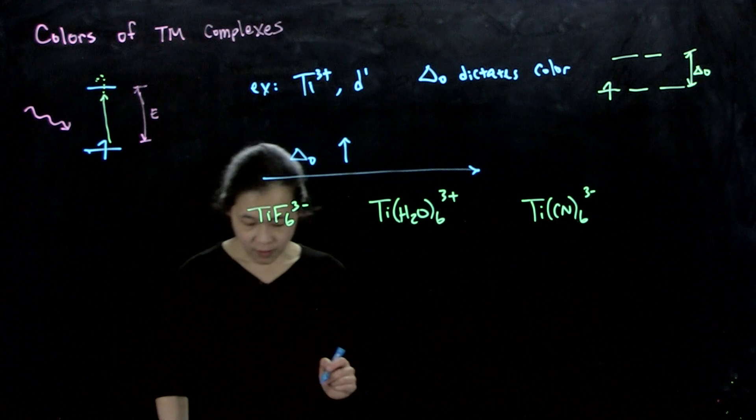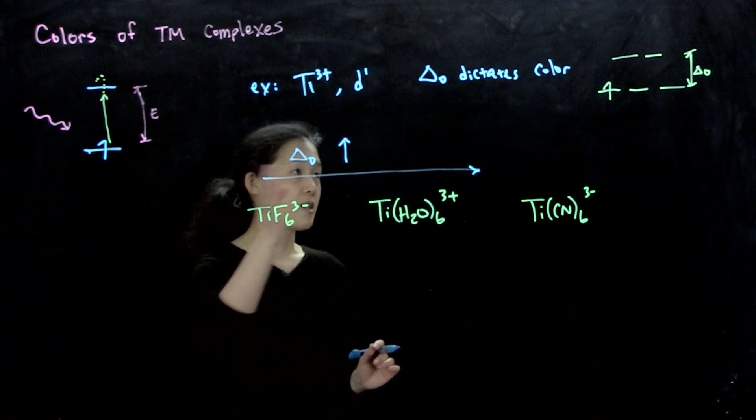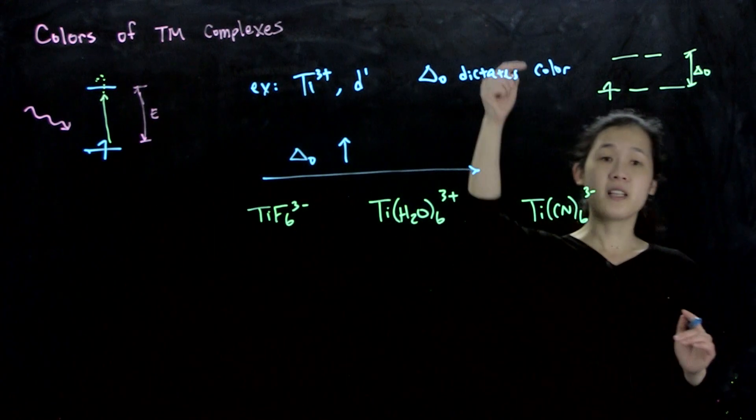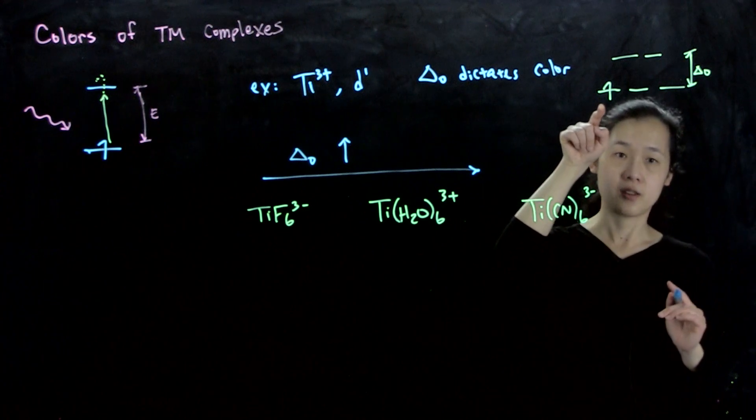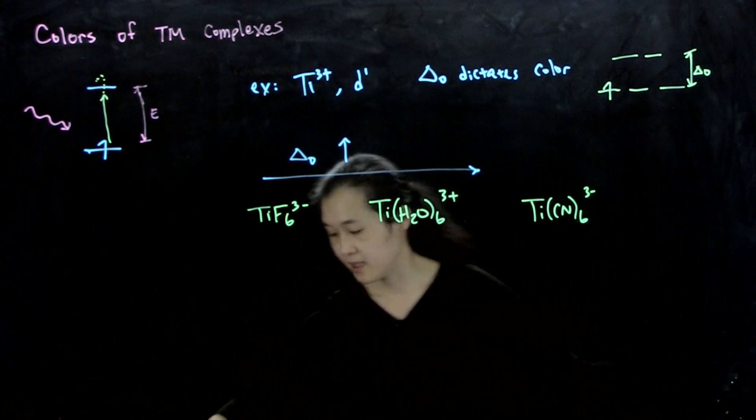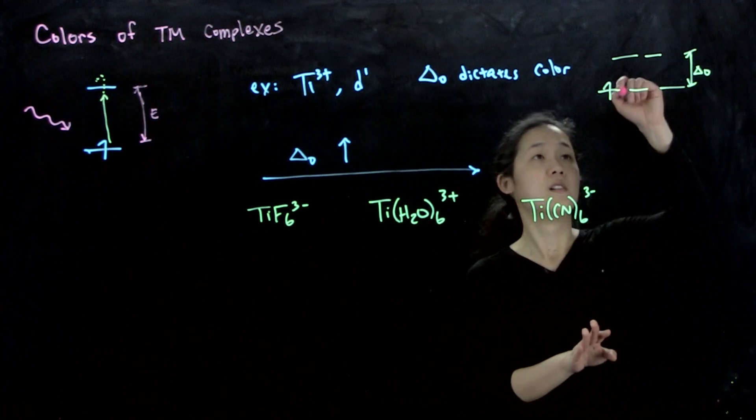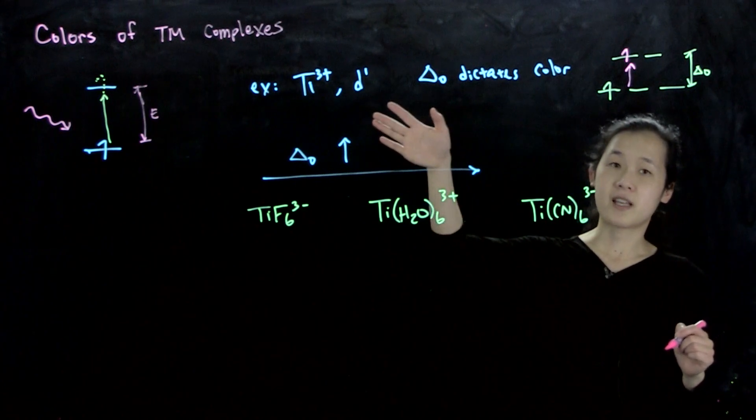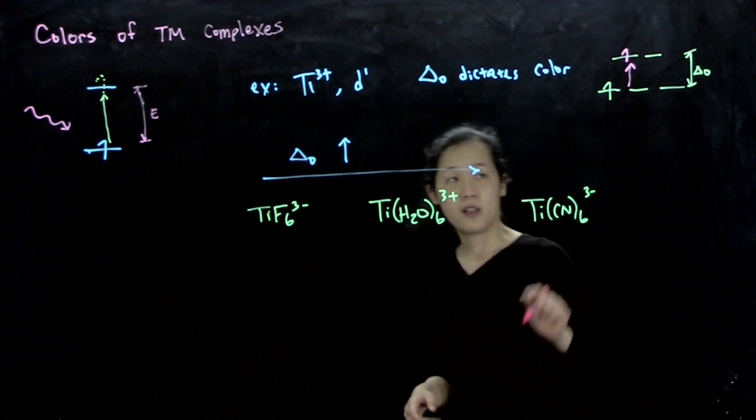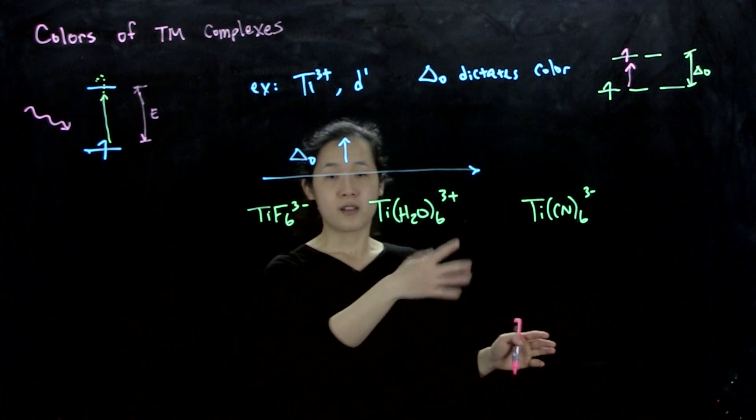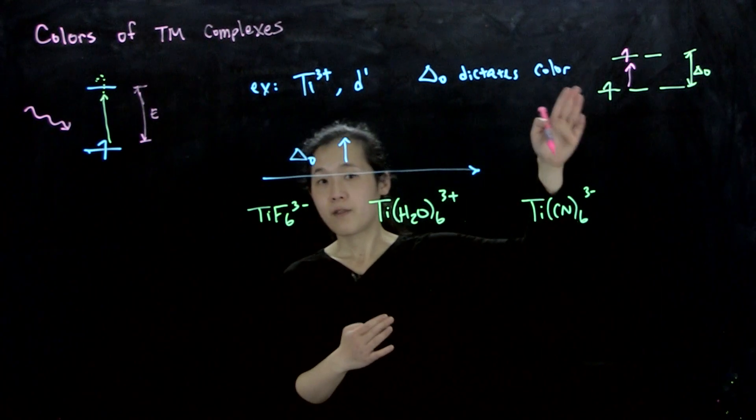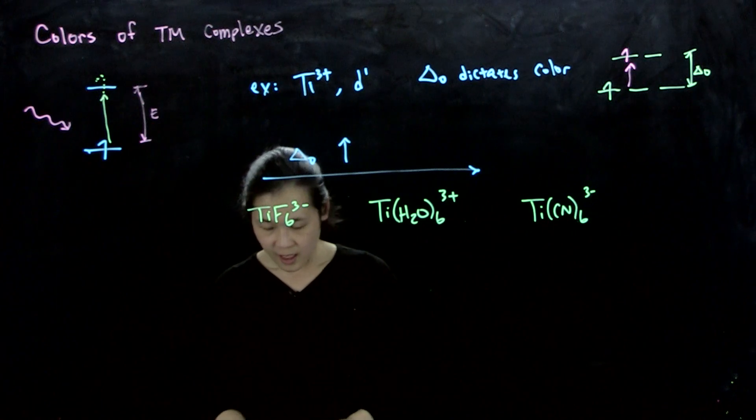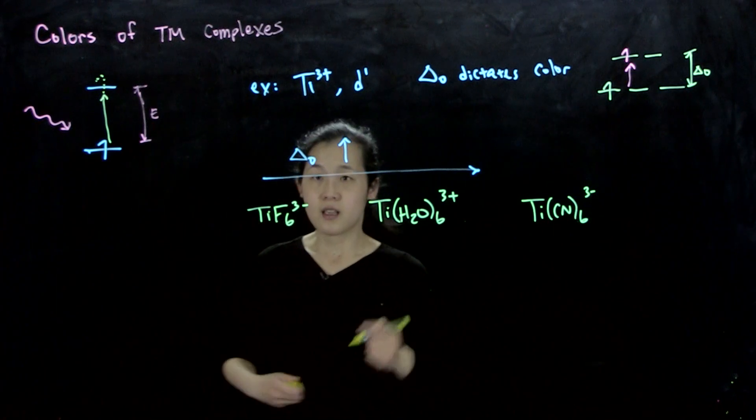If we look at the wavelength at which this color absorbs, so light comes in, this electron in the t2g orbital can get excited to the eg set. That's light absorption for these titanium 3 complexes. As we go across, the bigger your delta O is, the higher energy that photon must be to get absorbed.